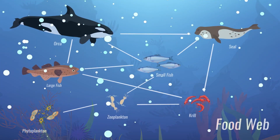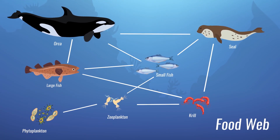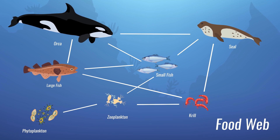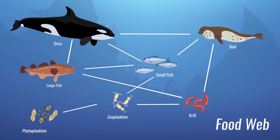When small species that form the basis of food webs are affected by OA, then the whole food web can be affected.